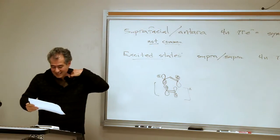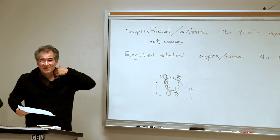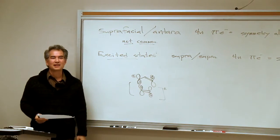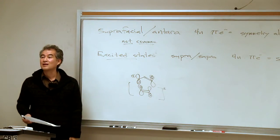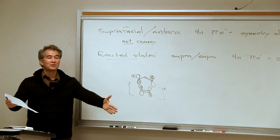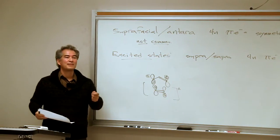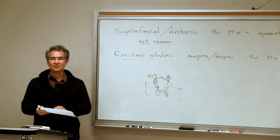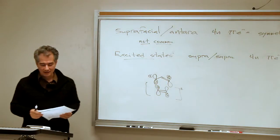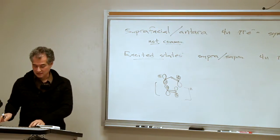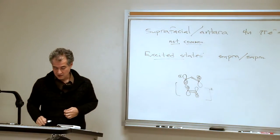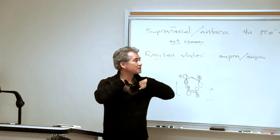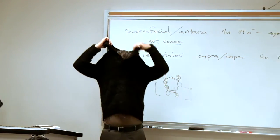We haven't yet covered photochemistry, so you'll have to wait for excited-state pericyclic processes until we get there — because most photochemistry goes through something called a triplet, which means stepwise radical reactions. Most photochemical reactions are not pericyclic; they involve radical processes and multi-step reaction mechanisms. Let's talk about the other common types of cycloadditions: dipolar cycloaddition reactions.